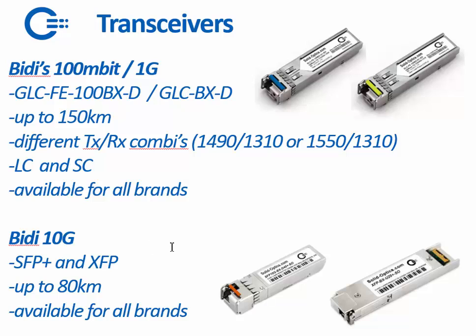For Dengik, they are available in SFP Plus and XFP. XENPAK and X2 can be made with a converter. Available up to 80 kilometers for all brands.